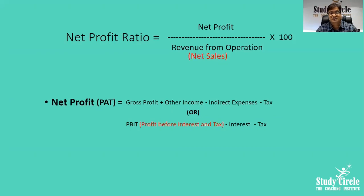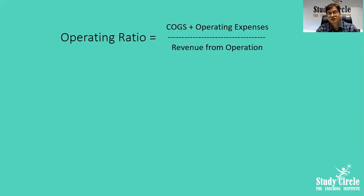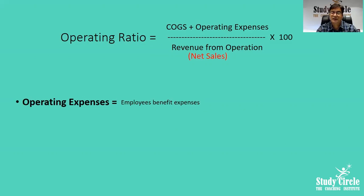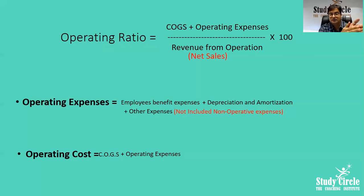Next formula is operating ratio, which is COGS plus operating expenses divided by revenue from operations into 100. Operating expenses include employee benefit expenses, depreciation, amortization, and other expenses — but not non-operating expenses. So operating cost is COGS plus operating expenses. Divide that by revenue from operations and multiply by 100 to get the operating ratio.